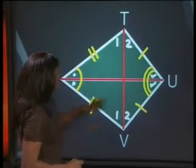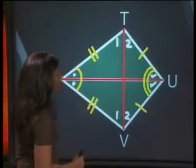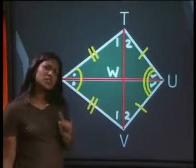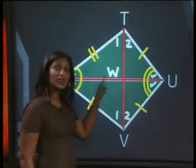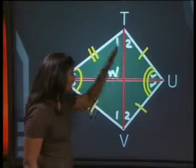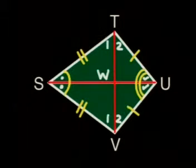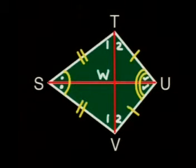Now let's label this point W, that is where the diagonals intersect each other. What about the angles at W? Can we say that the lines are perpendicular to each other? Without actually measuring the angles, how can we tell?